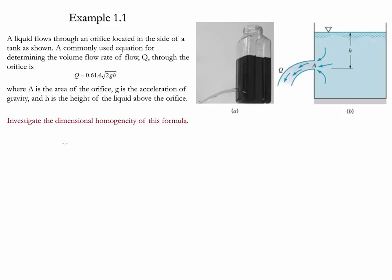We start the analysis with the dimensions of Q. Q is length to the cube divided by time. We know that the area is length square, we know that the gravity is length over time square, and we know that H is length.